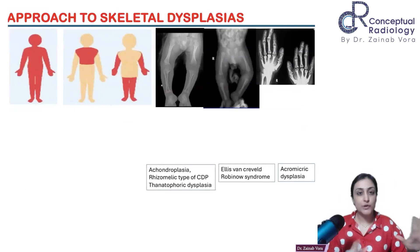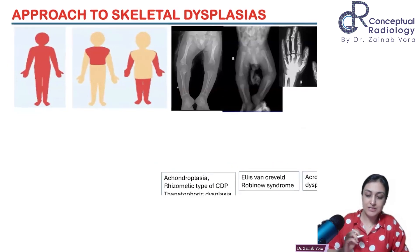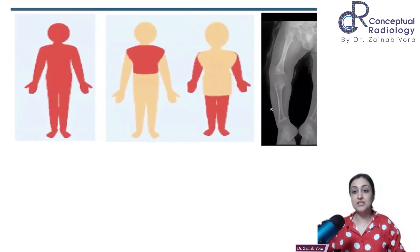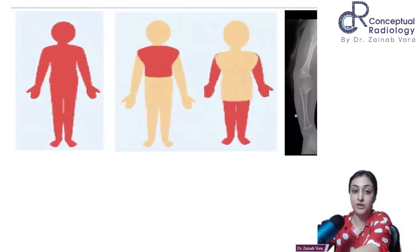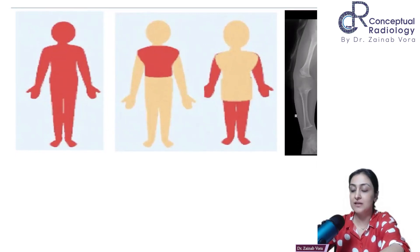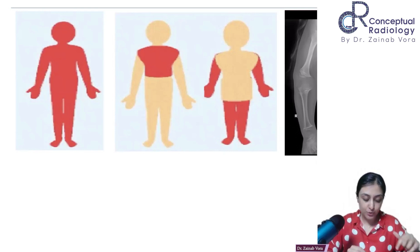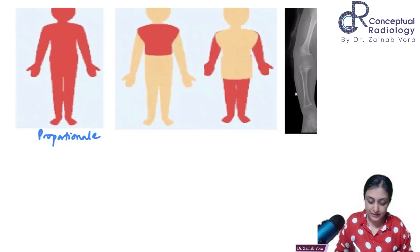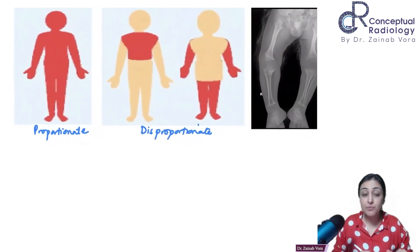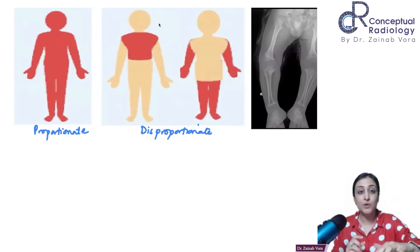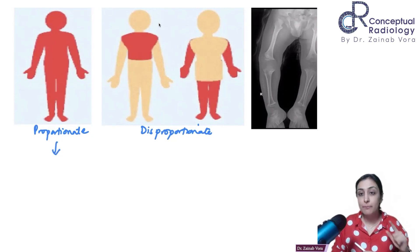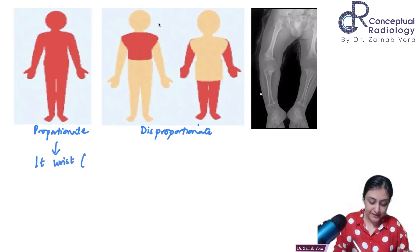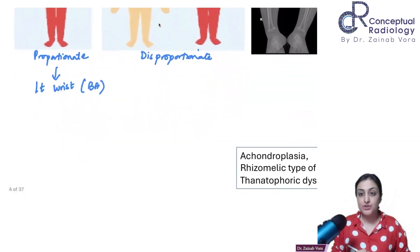Now the real approach. The first step is to determine whether it's a proportionate or disproportionate short stature. In proportionate short stature, you do not perform a skeletal survey — you only do bone age assessment using a left-sided wrist X-ray. If bone age equals chronological age but height is low, the likely diagnosis is familial short stature.